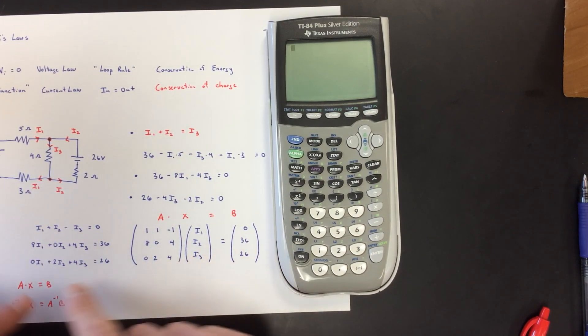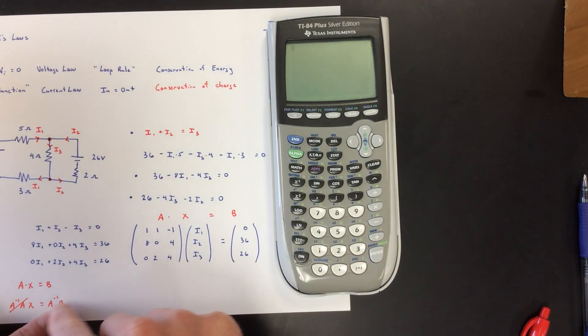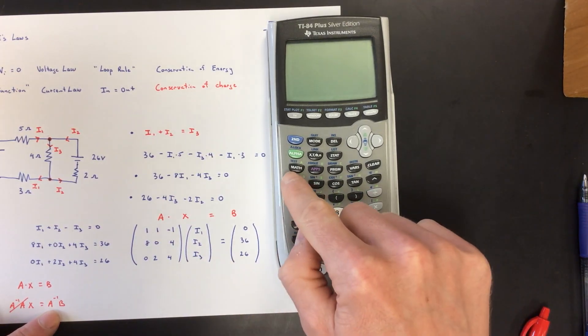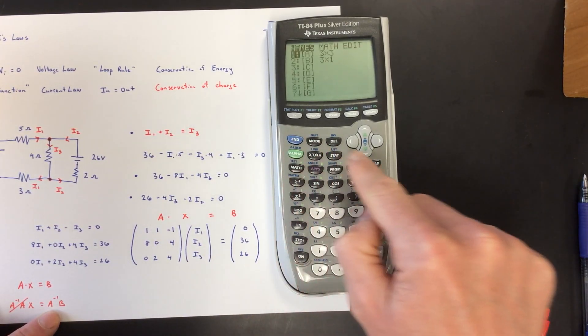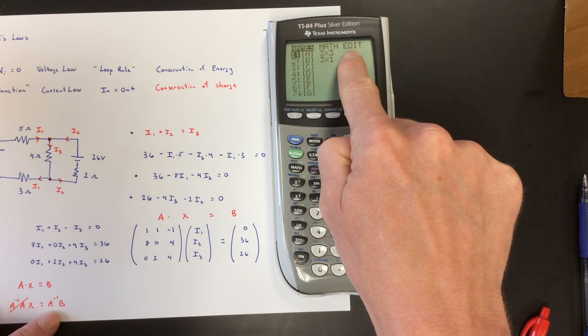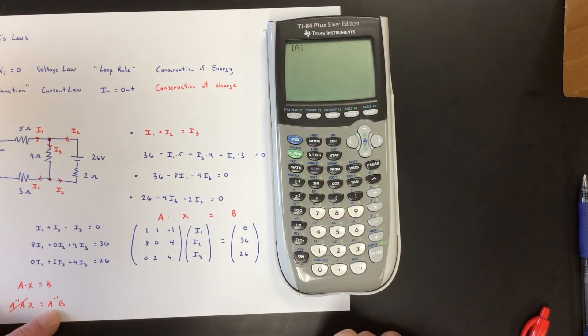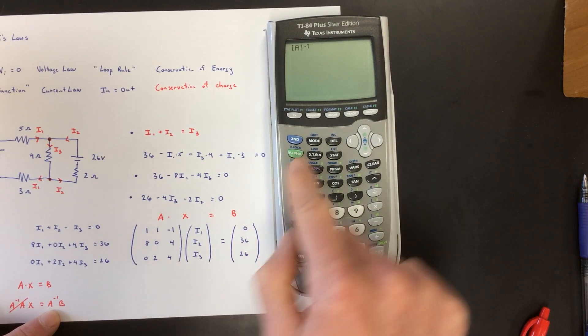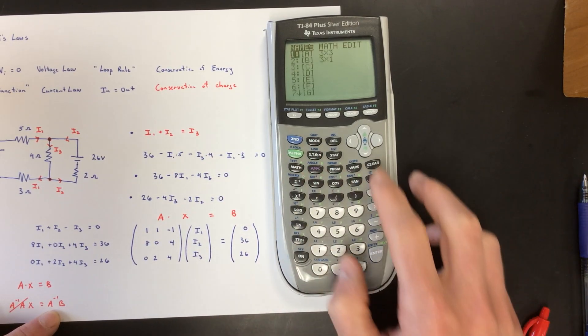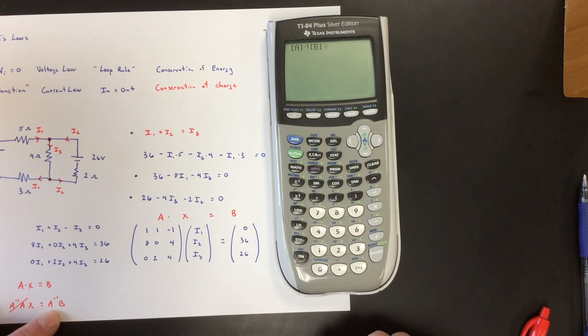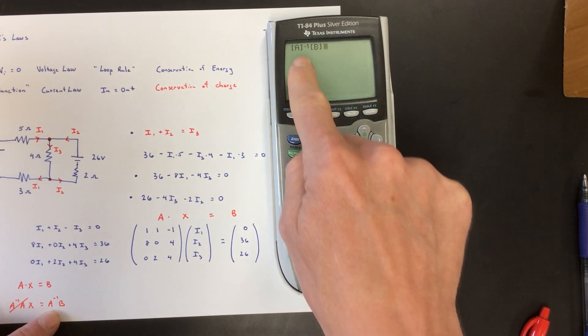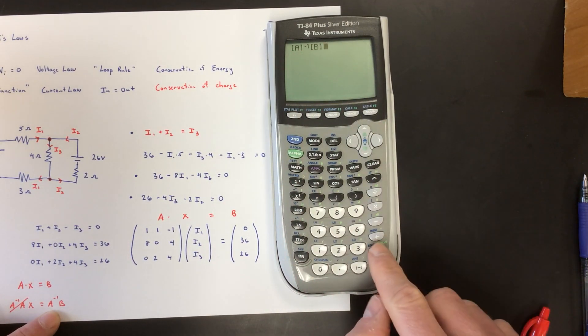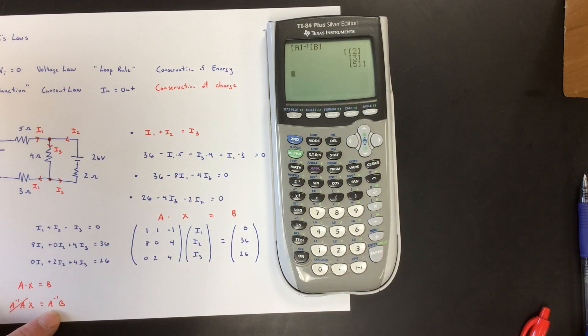To solve for this, we just need to tell our calculator to find matrix inverse A and then multiply by B. Go ahead and do second matrix, and I want to use A. I want A inverse, so go ahead and hit that button to give you A inverse, and then go second matrix and then into B, and then use B. So now I'm telling my calculator multiply matrix A inverse times B, and I get two, three, five.